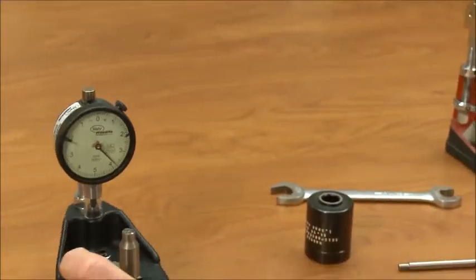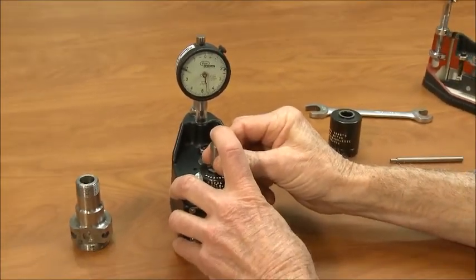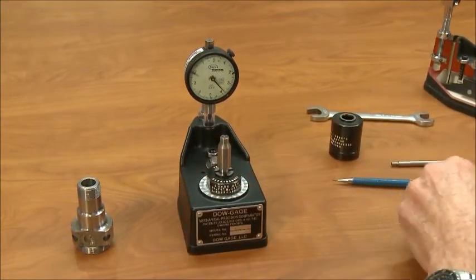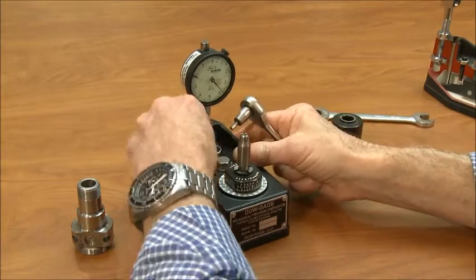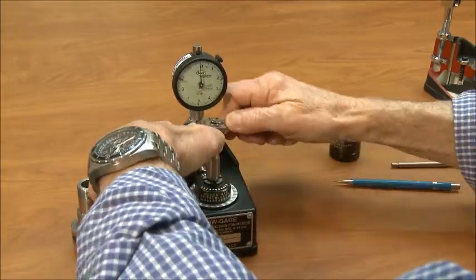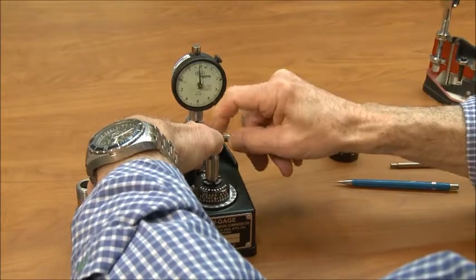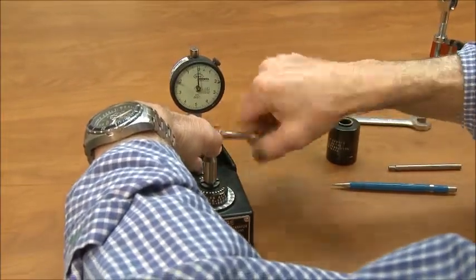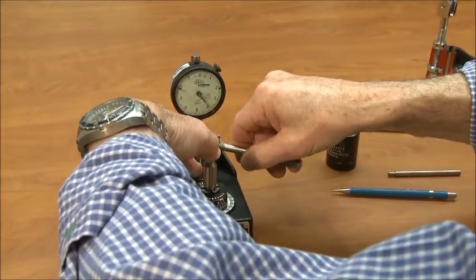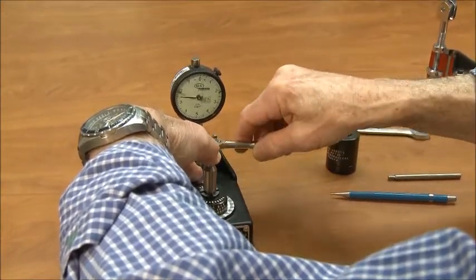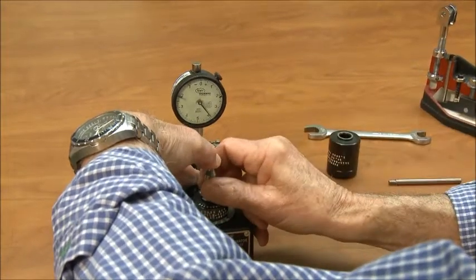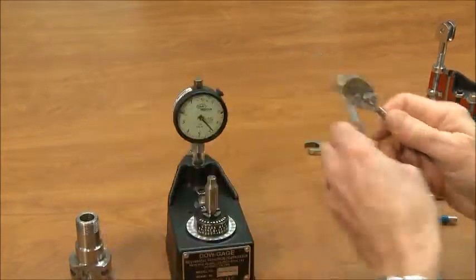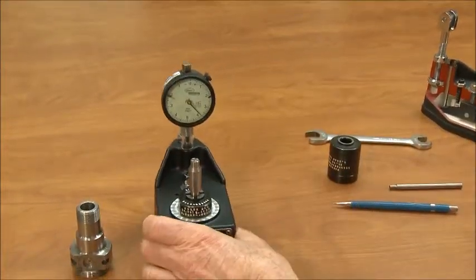In this case we're going to limit the travel on the indicator to one revolution past zero. We do that by adjusting the adjustable stop, tightening that down so that the indicator is only allowed one half revolution past zero. This prevents an override and a faulty reading of the zero.